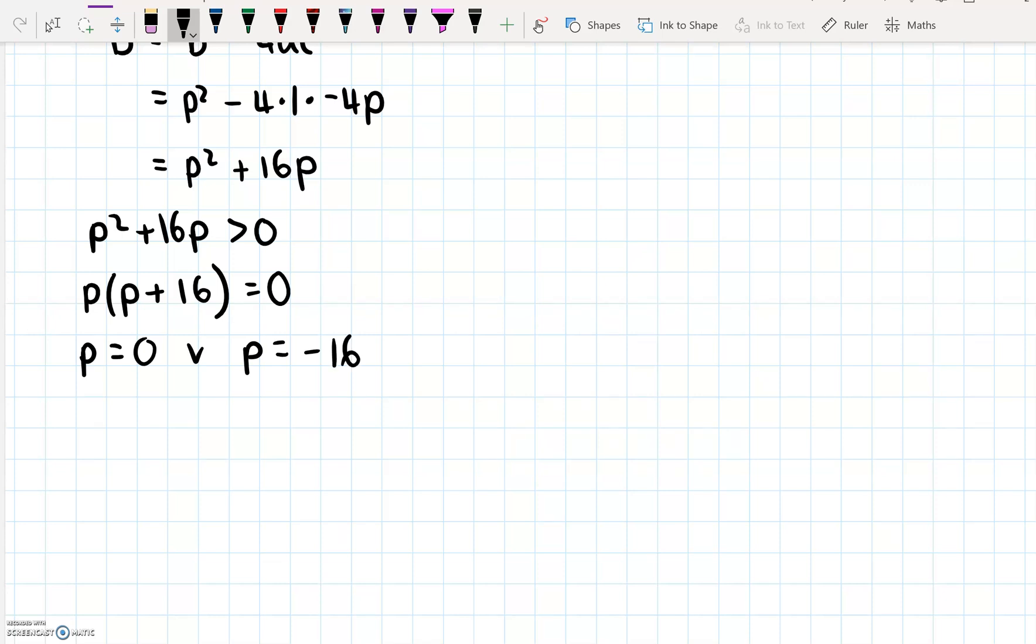But remember, our equation originally, our inequality, had an inequality symbol in it. That means our answer should as well. So we need to think about what we're going to do here. We have p squared plus 16p. That is a parabola. And I told you guys earlier that if you have a parabola in an inequality, then you must draw a sketch. So draw a little sketch over here.